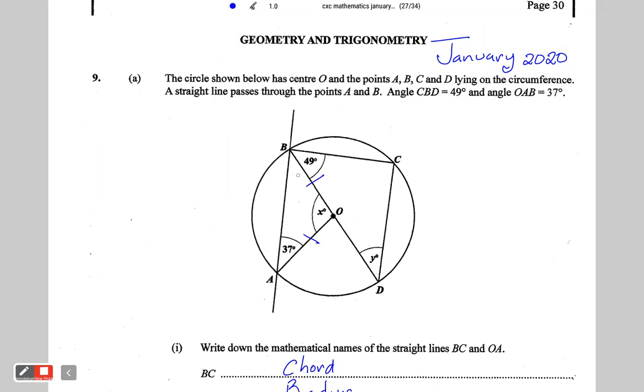So in which case, the angle down here, theta, would also be equal to 37 degrees. And then now the three angles, 37, 37 plus X would be equal to 180 degrees. The angles in a triangle add up to 180 degrees.